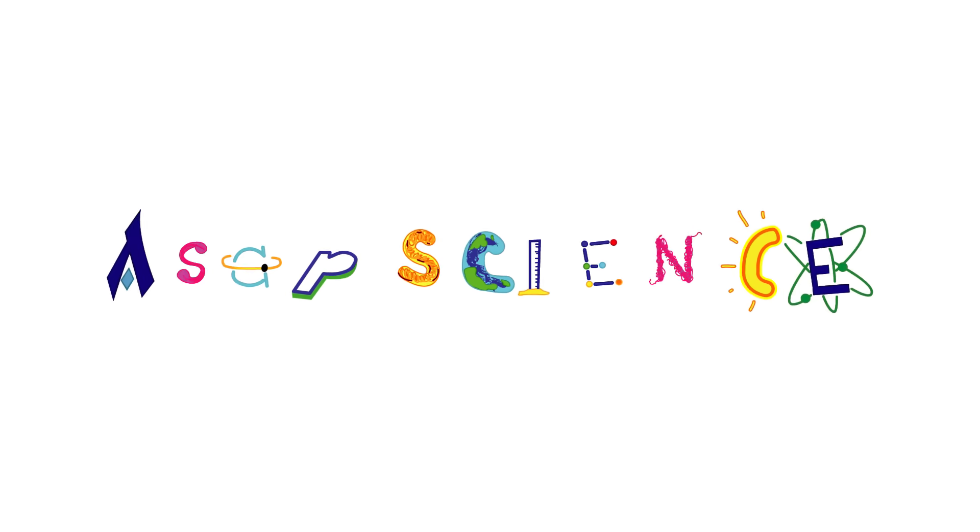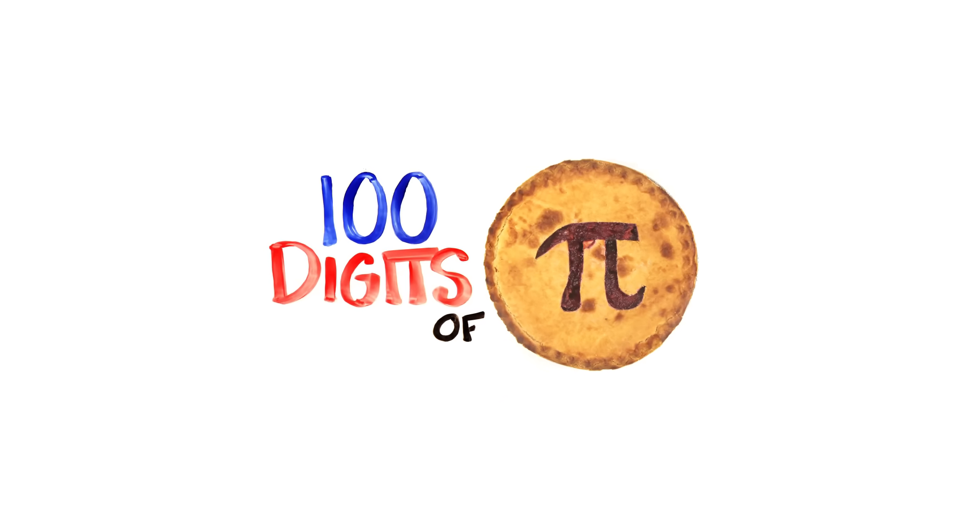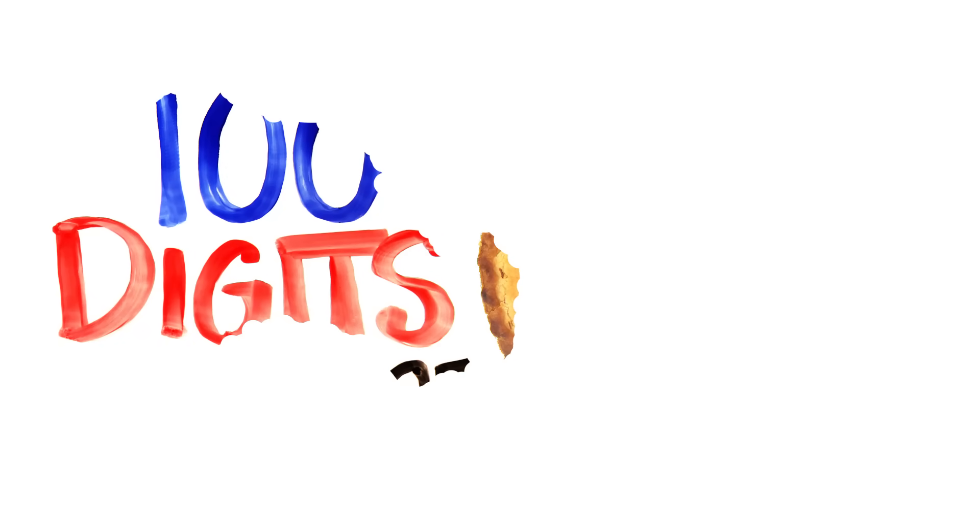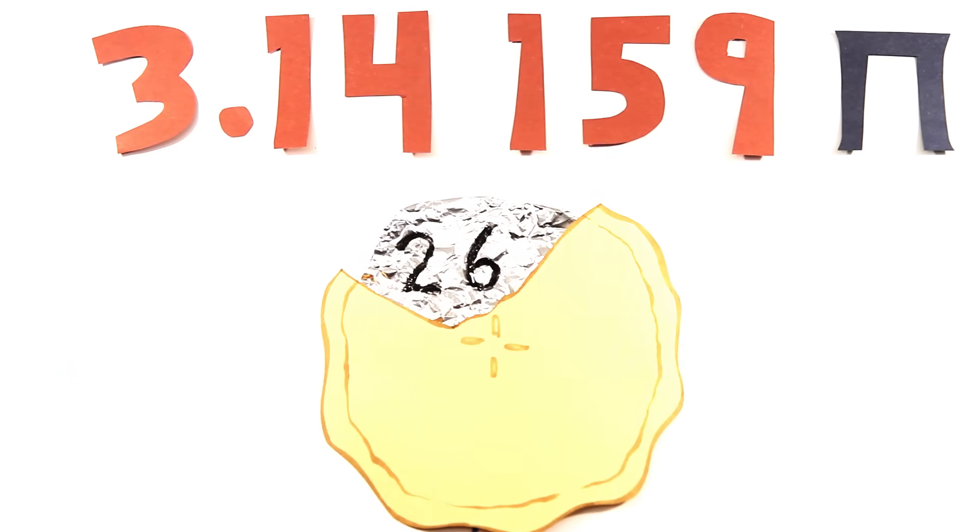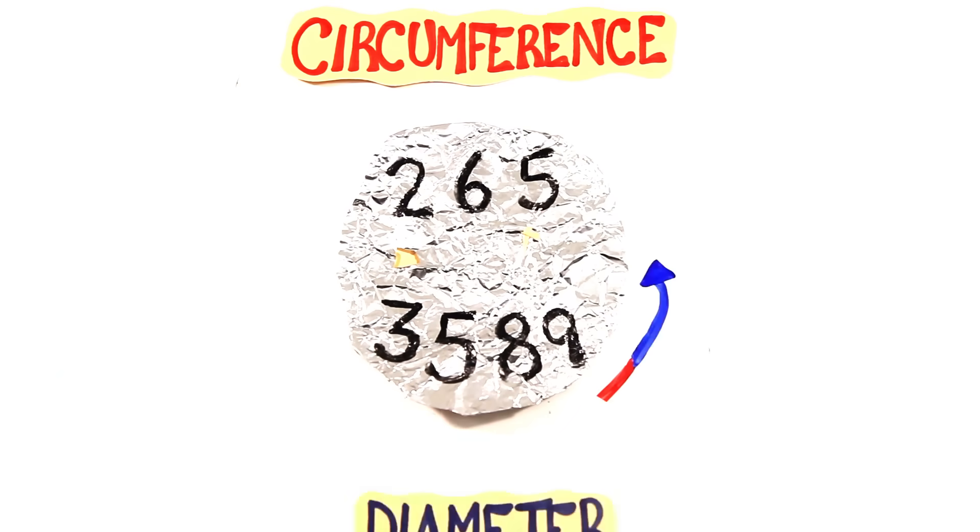And now, ASAP Science presents 100 Digits of Pi. 3.14159, this is Pi, followed by 2653589, circumference over diameter.